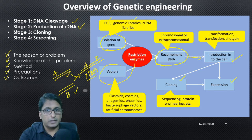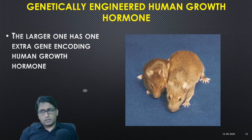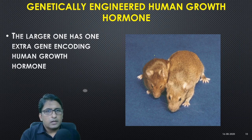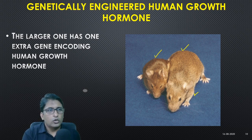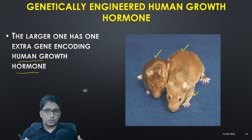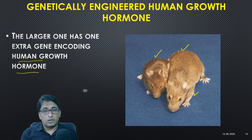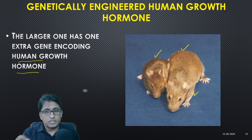Here are some quick examples. Here are two mice — the bigger one has a gene inserted into its genome for human growth hormone. Because of this additional gene, human growth hormone is produced in slight excess, causing the mouse to grow larger than its peers. Just by adding a gene, you can see the increase in size.